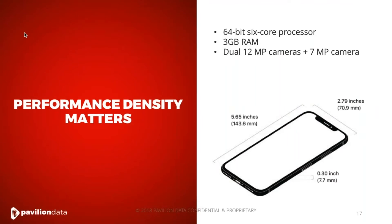We've seen this transition happen in the cell phone industry. If you look at cell phones today, they're extremely powerful — they can do what desktops and servers could do. A single iPhone or Android phone packs a 64-bit, 6-core processor, a lot of memory, cameras, batteries, and lots of peripherals, all into a really small form factor that fits in your pocket. Why would somebody carry a phone if it were as big as a laptop? With costs rising — power, cooling, space, data — it's important for us to design systems and data centers that are incredibly dense with incredible performance. At the end of the day, data is growing, and you need to do more with less.